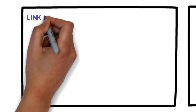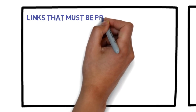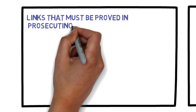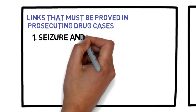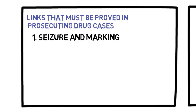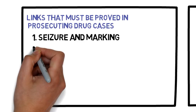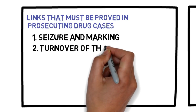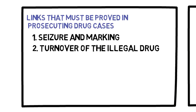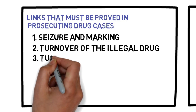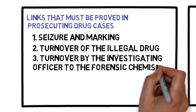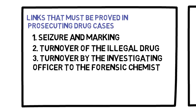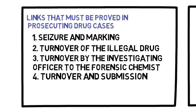What are the links in the chain of custody of evidence in drug-related cases? The following links must be proved in prosecuting drug-related cases: one, seizure and marking, if practicable, of the illegal drug recovered from the accused; two, turnover of the illegal drug by the apprehending officer to the investigating officer; three, turnover by the investigating officer to the forensic chemist for laboratory examination.